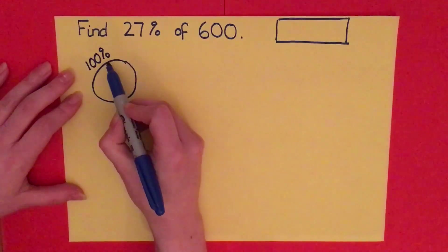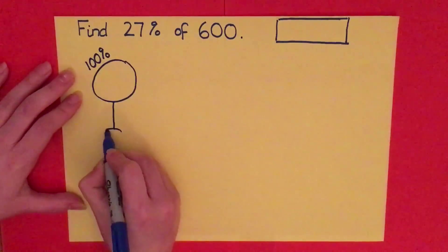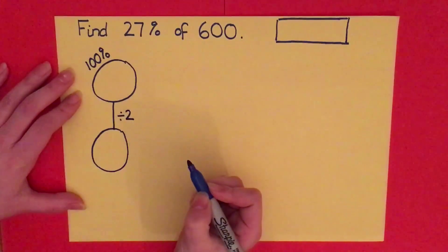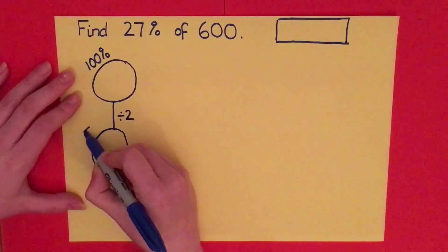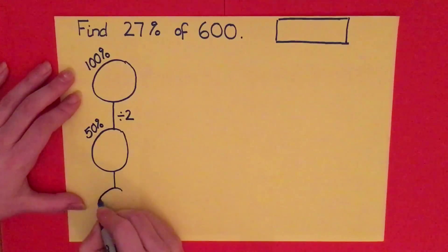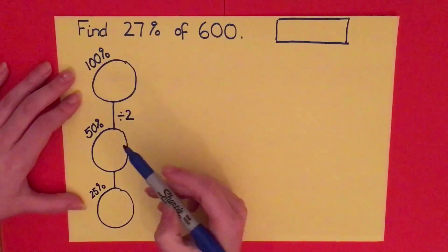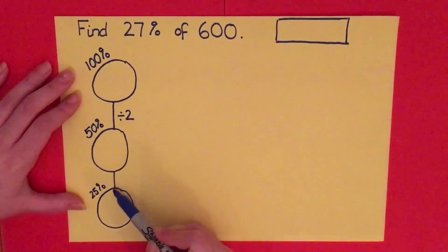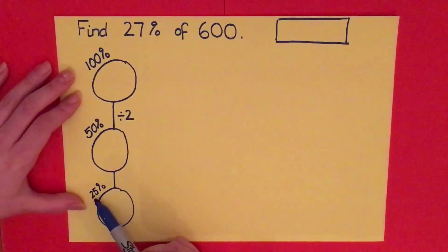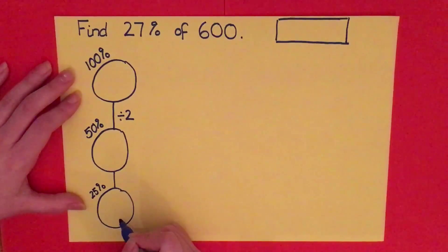This bubble represents 100% — the whole number that you have. If you move down on the bubble method, you always divide by two, so the next bubble represents 50%, and the one below that represents 25% because I've halved 50. It's really important to note that these values are just what the bubble represents — that's not your answer.